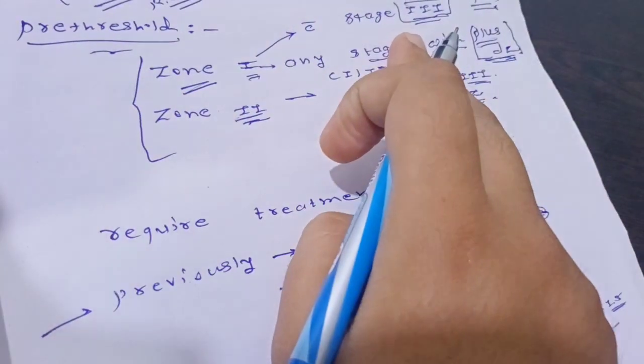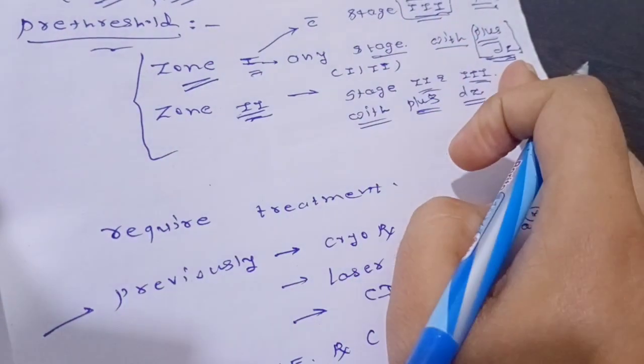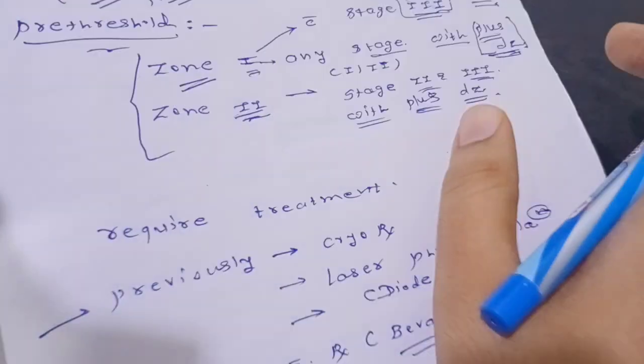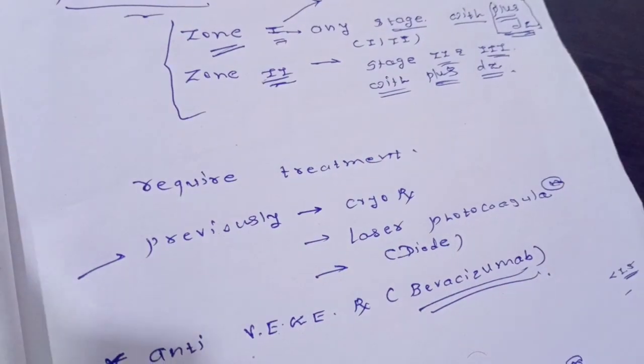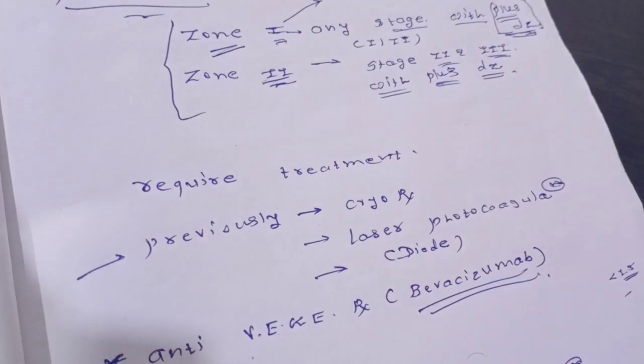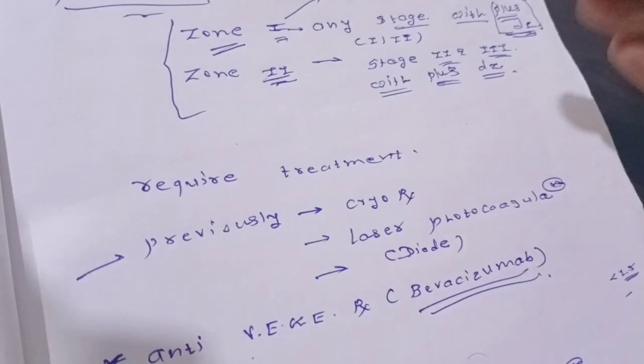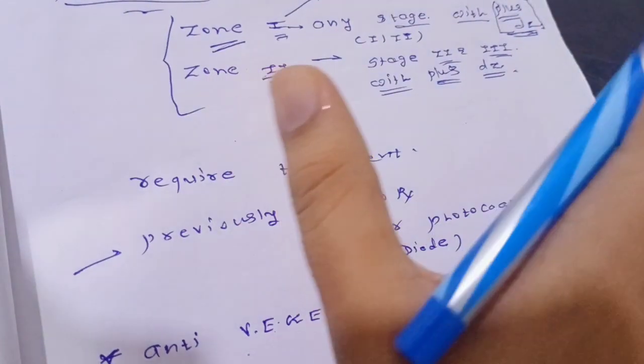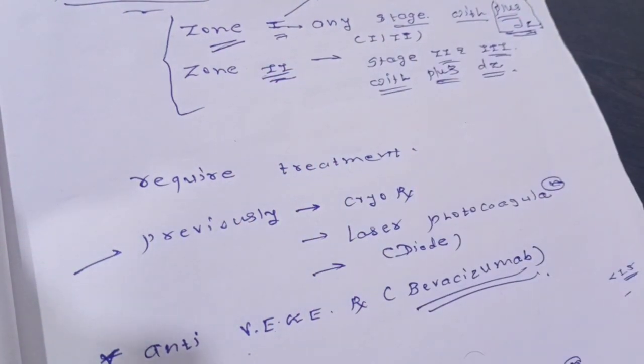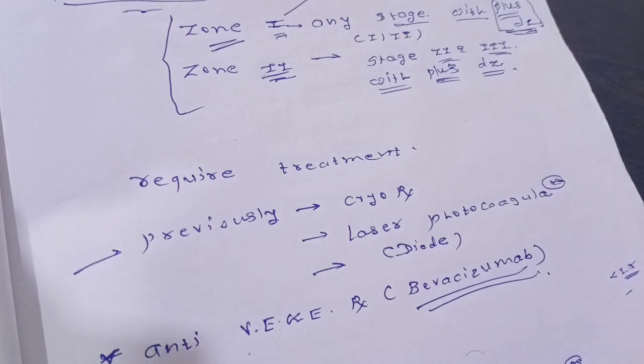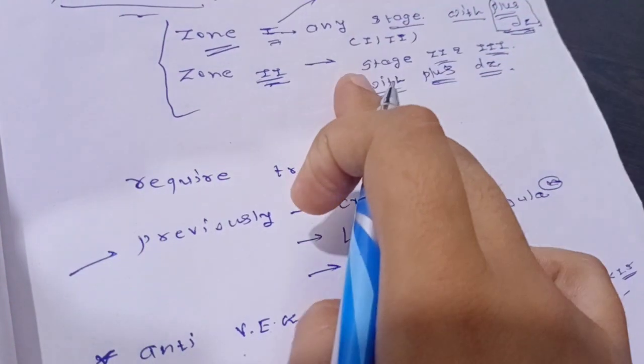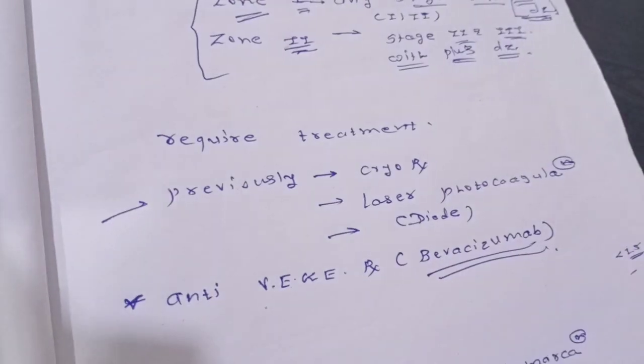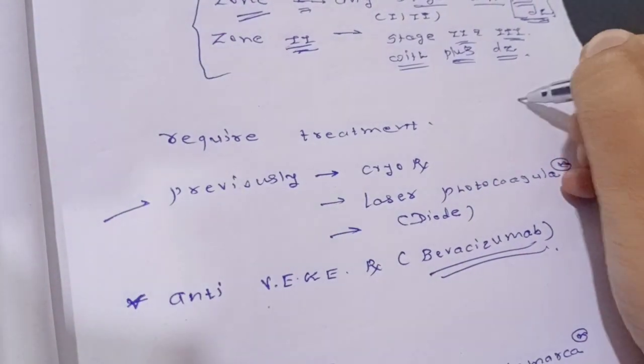Zone 1 Stage 3, or Zone 1 any stage with plus disease, but Stage 1 or 2 without plus disease will not be considered pre-threshold. We will examine every 15 days up to 40 weeks. It will be at risk until complete maturation of vascular retina occurs. It will always have risk of abnormal proliferation. This pre-threshold is also known as Type 1 ROP. What will we do for treatment?